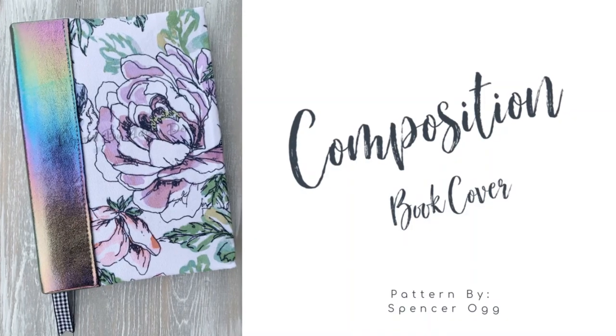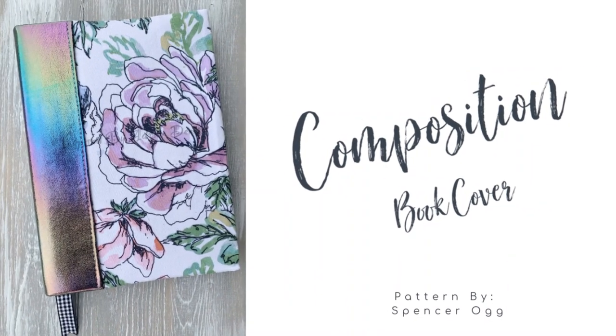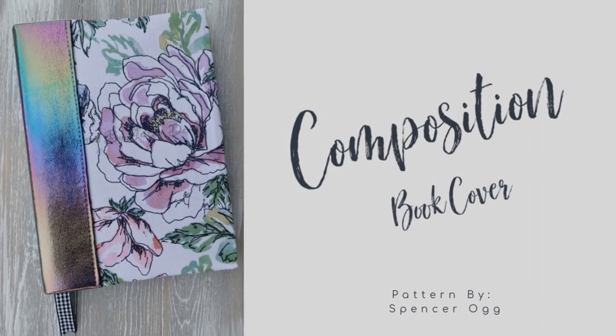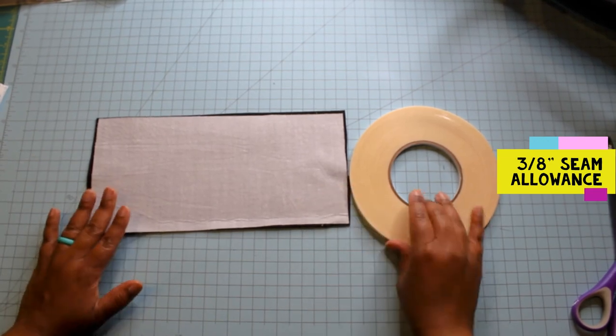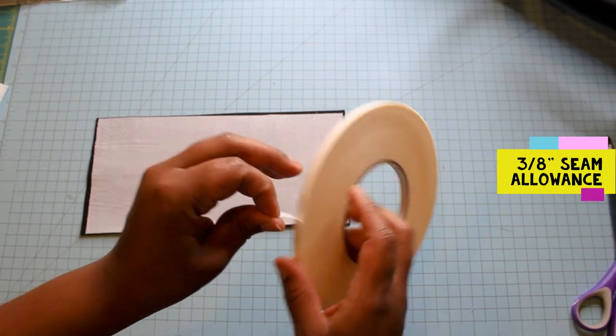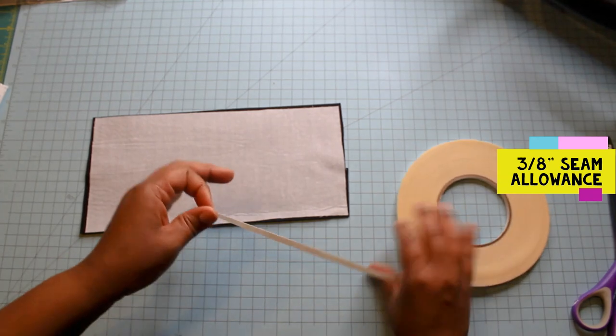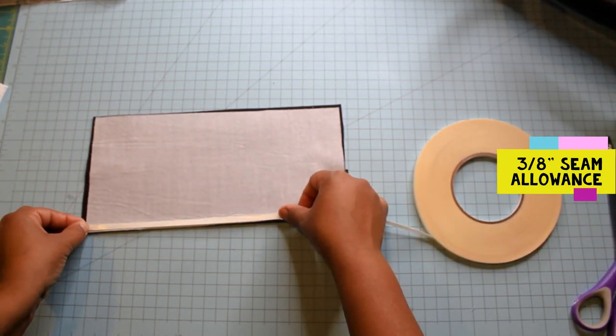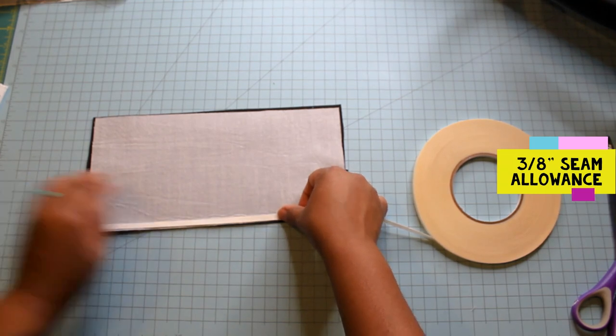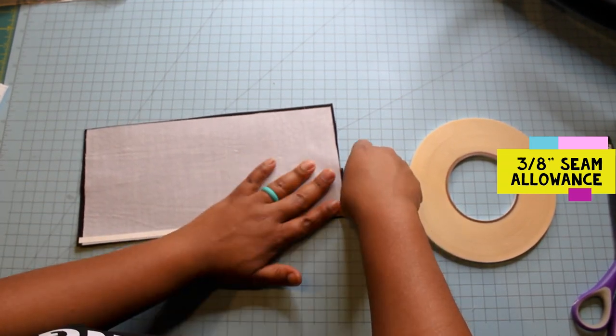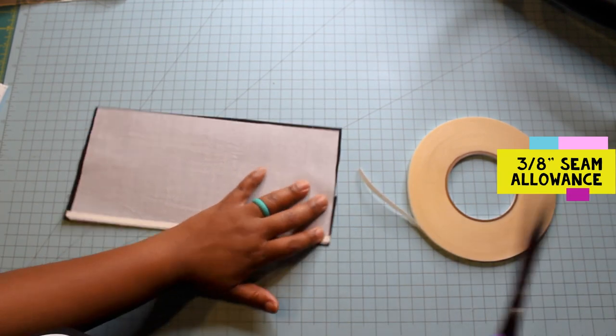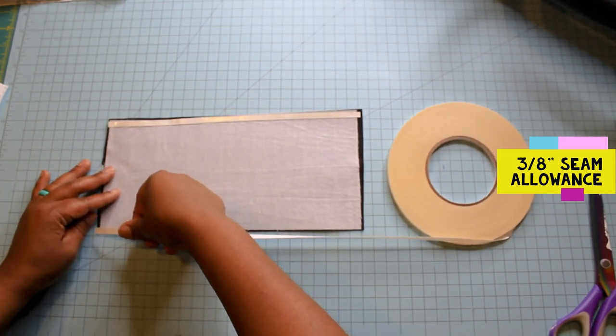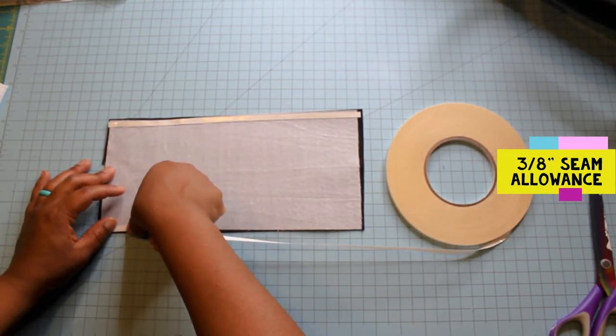Now if you'll notice I am actually using a vinyl for my spine. This vinyl is actually not a very thick vinyl so I felt like putting some of the woven fuse on this would actually help to give it a little bit of stiffness. So really quick I wanted to tell you guys one of the main things that I saw people commenting on in the Spencer Ogg group was for those who were using vinyl on the spine: How do you get the fold to stay? How do you keep it in place? So I'm going to show you my tip here.